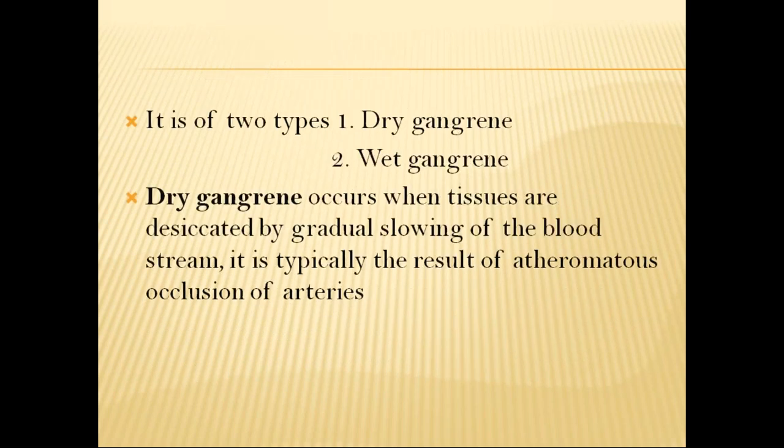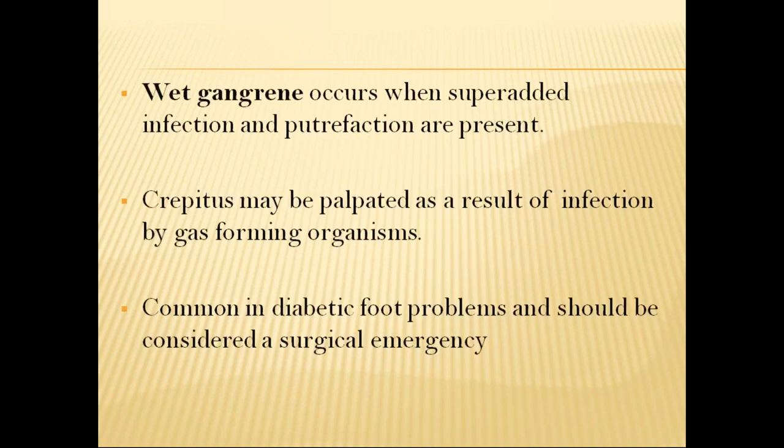There are two types: dry gangrene and wet gangrene. Dry gangrene occurs when tissues are desiccated by gradual slowing of the bloodstream. It is typically the result of atheromatous occlusion of the arteries. Wet gangrene occurs when there is superadded infection and putrefaction. Crepitus may be palpated as a result of infection by gas-forming organisms in gas gangrene cases.